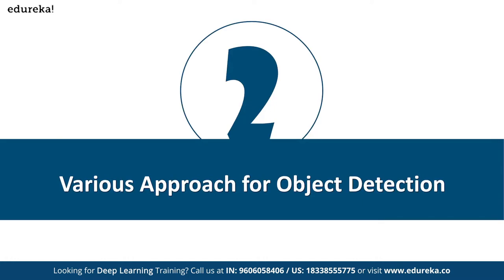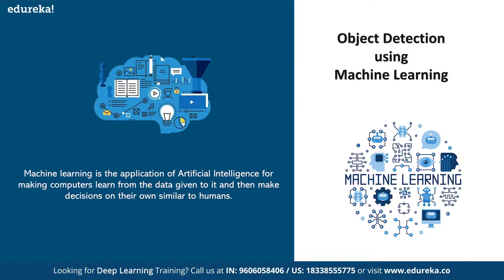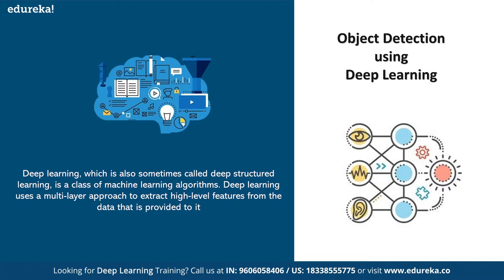What are the various approaches for object detection? Object detection is a process of finding all possible instances of real-world objects such as humans, cars, cats, etc. in images or videos. You can apply object detection on a video and get all detected things with a probability score. You can apply object detection using both machine learning and deep learning techniques, though it is mostly deep learning techniques you will end up using.